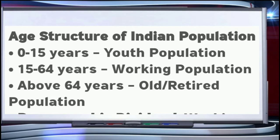The age structure of population refers to the proportion of persons in different age groups relative to the total population. Age structure in a country changes with the development level of that country. Now there is a word dependency ratio. It is the measure comparing the portion of population which is composed of dependents with the portion that is working, meaning generally in the age group of 15 to 64 years.